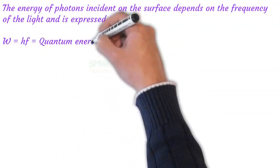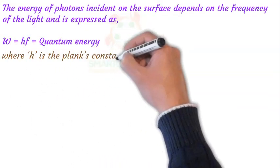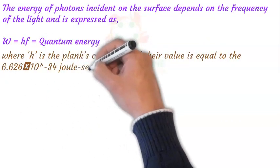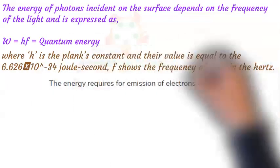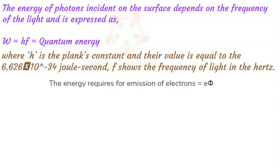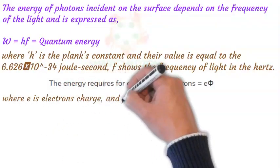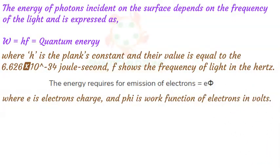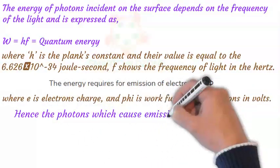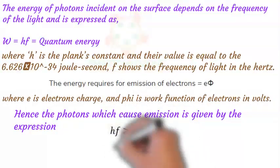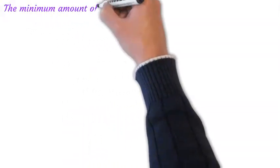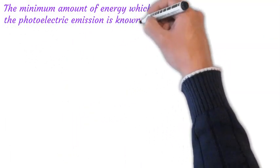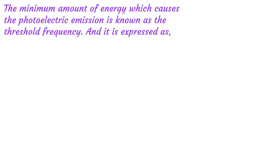The energy of photons incident on the surface depends on the frequency of the light. The energy required for emission of electrons equals e times phi, where e is the electron's charge and phi is the work function of electrons in volts. Hence, the photons which cause emission are given by this expression. The minimum amount of energy which causes the photoelectric emission is known as the threshold frequency.